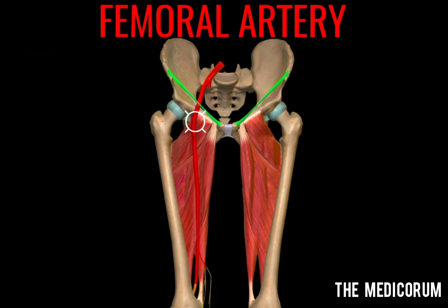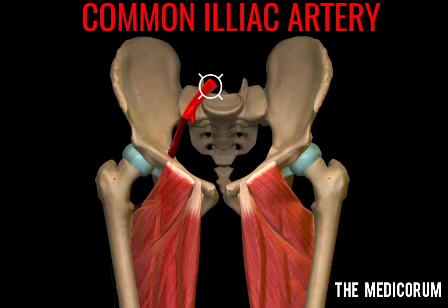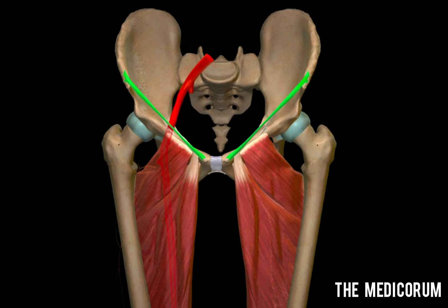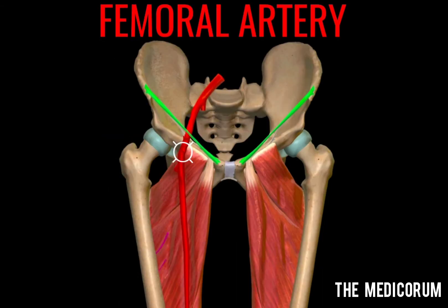The femoral artery is the chief artery of the lower limb. The common iliac artery divides into internal and external iliac artery. The external iliac artery, behind the inguinal ligament, continues as the femoral artery. Hence, the femoral artery is the continuation of the external iliac artery.